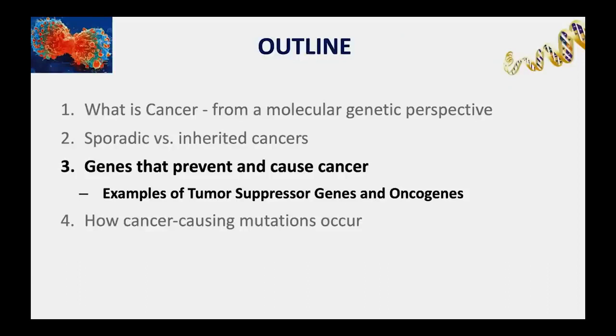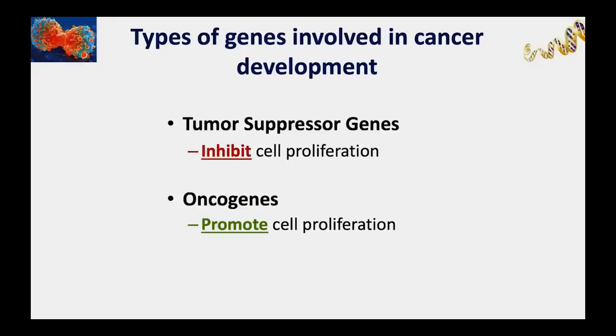Now we'll talk more specifically about the types of genes involved in cancer development. These genes fall into two broad categories. Tumor suppressor genes—as the name suggests—encode proteins that inhibit cell proliferation. Their normal function in the body is to suppress tumor growth, inhibiting cell proliferation and preventing tumor formation.